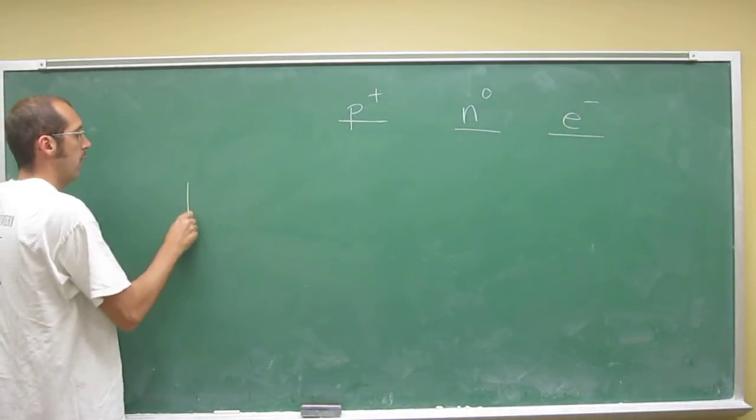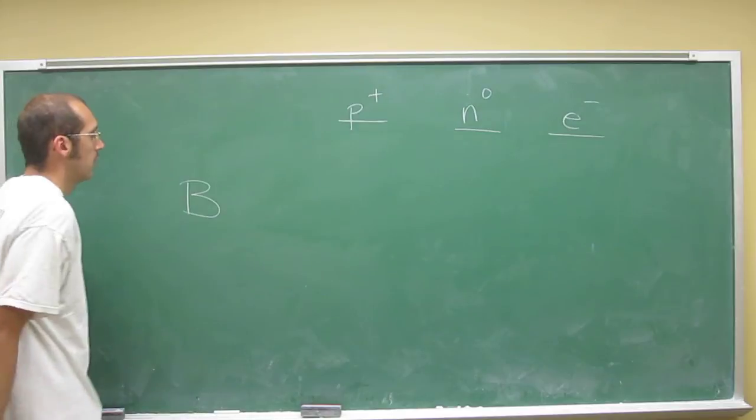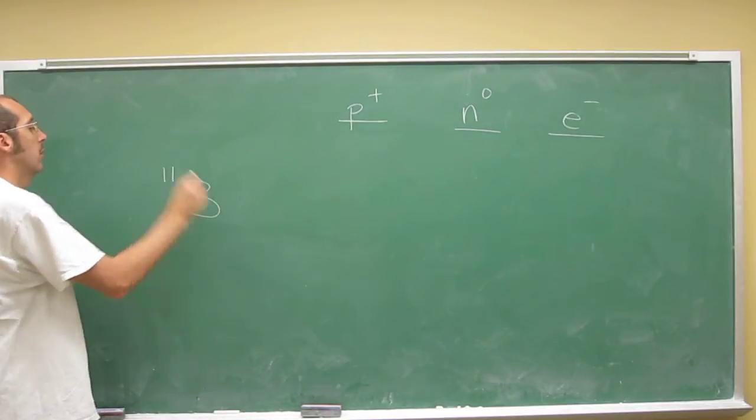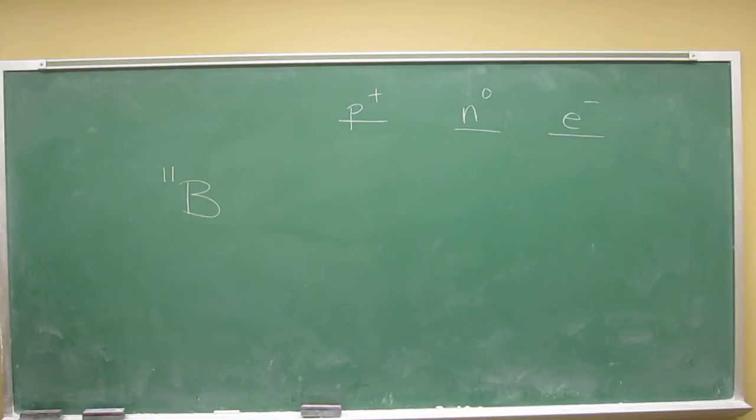So, boron's elemental symbol is B. Boron 11, mass number, superscript in the top left. If you want to, you can put the atomic number there too.